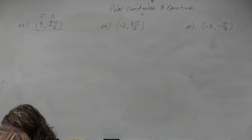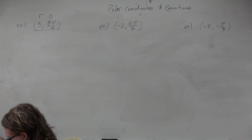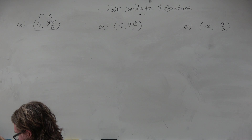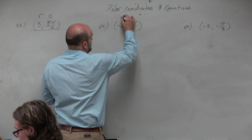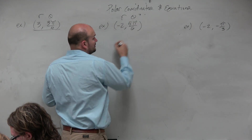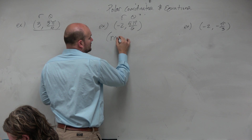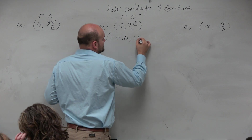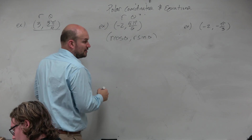If I was given a polar point in general, I would just convert it to rectangular form. So if here's your polar point r theta, rectangular form is r cosine of theta, r sine of theta. It's in your notes — we've talked about it over and over.